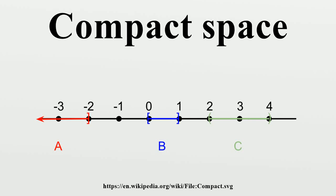In mathematics, and more specifically in general topology, compactness is a property that generalizes the notion of a subset of Euclidean space being closed and bounded. Examples include a closed interval, a rectangle, or a finite set of points.